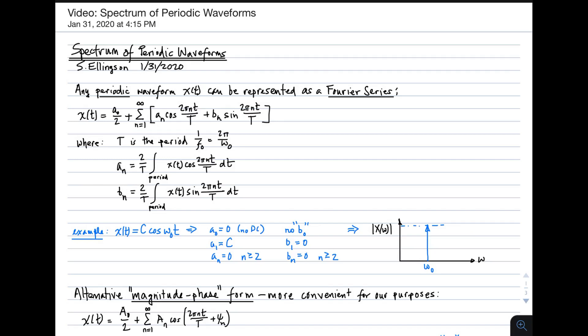Hi, Steve Ellingson here with a video on spectrum of periodic waveforms. First, recall that any periodic waveform can be represented using a Fourier series, which is simply an infinite sum of sines and cosines. So if it's periodic, we can represent it if we add up enough sines and cosines.